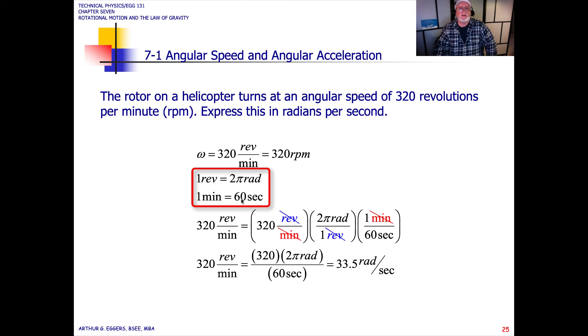One minute is 60 seconds. We need to get it in seconds because that's our SI unit. So 320 revolutions per minute times 2 pi radians per revolution times one minute is 60 seconds. We've tied three steps together as a factor unit here: 320, 2 pi, 1 over 60. When we do that, 320 times 2 pi times 1 divided by 60, our revolutions cancel, our minutes cancel, and we end up with 33 and a half radians per second equals 320 revolutions per minute.